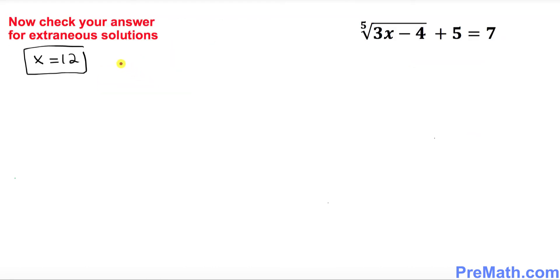And finally, we want to check our answer, our solution x equal to 12, for any extraneous problem. So wherever you see x, you replace this x by 12 and see what happens. We're going to simply plug it in: the fifth root of 3 times 12 minus 4, plus 5. My question is, is it equal to 7?